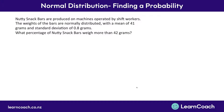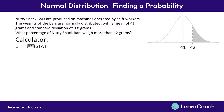Let's look at one more question along the same lines. We're still talking about nutty snack bars with a mean of 41 and a standard deviation of 0.8 grams, but now they're asking what percentage of nutty snack bars weigh more than 42 grams. On our graph, we've got the limit of 42 grams and we want to know everything above that. We go into statistics, then distribution, then normal, and again NCD because a percentage means a probability.